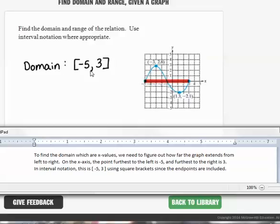In interval notation, this is negative 5 to 3, using square brackets, since the endpoints are included.